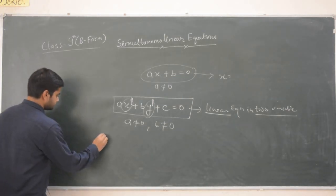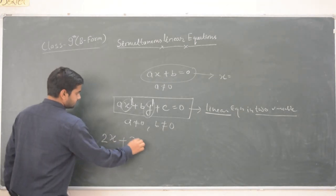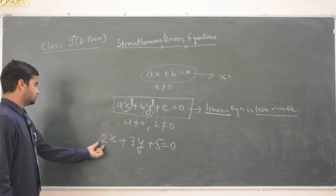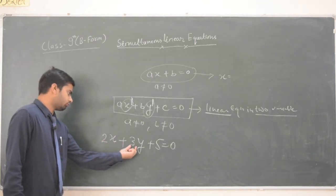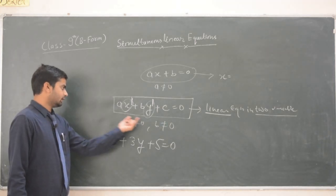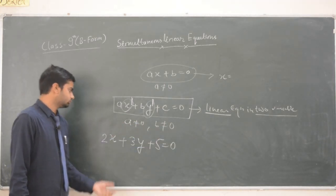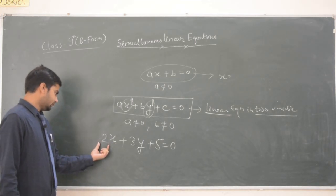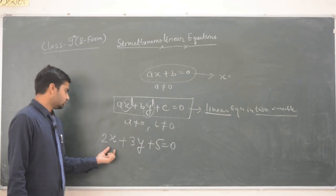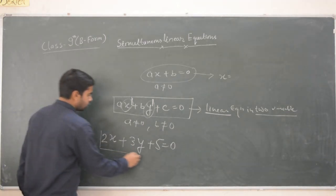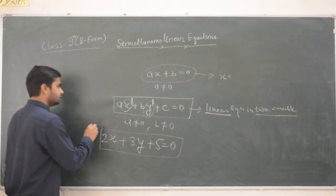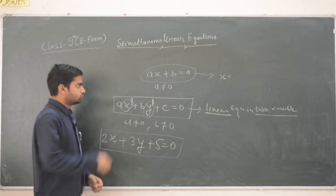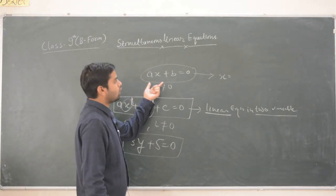So ax plus by plus c equal to 0 type equations are always called linear equations in two variables. For example, 2x plus 3y plus 5 equal to 0: the coefficient of x is 2 and coefficient of y is 3, both non-zero, satisfying our condition a not equal to 0 and b not equal to 0. So this equation is an example of a linear equation in two variables.